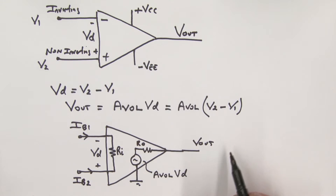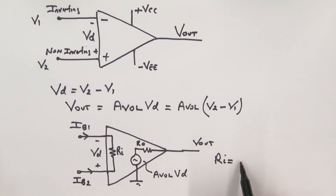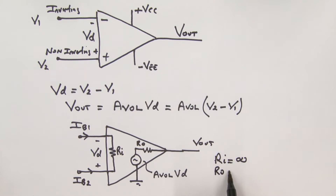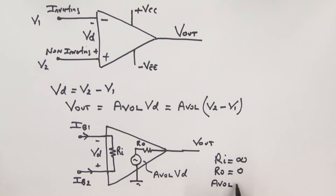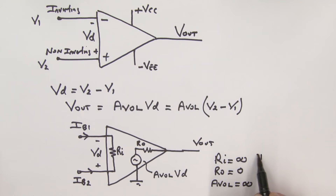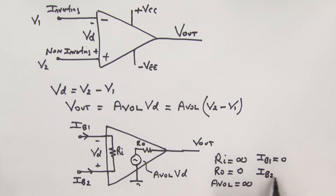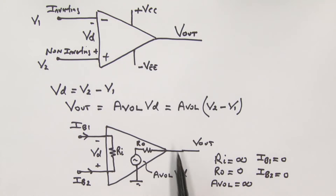For the ideal operational amplifier: the input resistance RI is assumed to be infinite, the output resistance RO is assumed to be zero, and the open-loop gain AVOL is assumed to be infinitely large. Consequently, the bias currents IB1 and IB2 are both equal to zero. This represents the ideal operational amplifier.